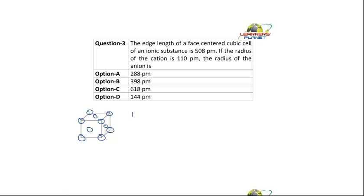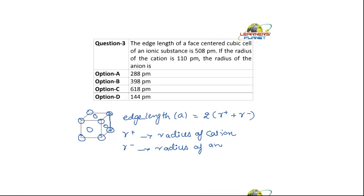So in this case, this is your face centered cubic lattice. Now for a face centered cubic lattice, your edge length is this. Edge length is A, and it is given by 2 into R plus plus R minus. What is R plus? R plus is the radius of cation and R minus is the radius of anion. So what is the edge length? Edge length is 508 picometer.